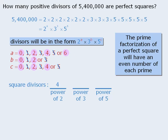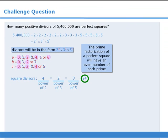On to the next stage. The power of 3 can be 0 or 2, so there are 2 ways to accomplish this stage. And finally, the power of 5 can be 0, 2, or 4, so there are 3 ways to accomplish this stage. Applying the fundamental counting principle, we multiply the number of ways to accomplish each stage to see that there are 24 ways to accomplish all 3 stages. So 5.4 million has 24 divisors that are perfect squares.